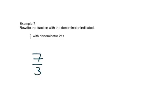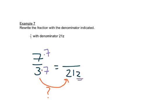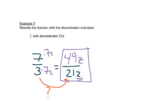We start with 7 over 3 and want to end up with a denominator of 21z. We ask: what do we multiply by to get 21z? Since 3 times 7 is 21, we multiply by 7 — and we also need the z, so we multiply top and bottom by 7z. On top, 7 times 7 is 49, giving us 49z over 21z. Notice our first fraction was improper, so our second should also be improper.